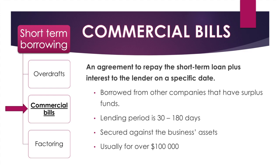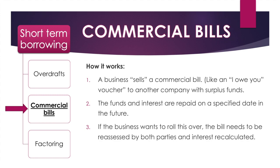Commercial bills are usually for amounts over $100,000. How a commercial bill works is that businesses sell an IOU — a piece of paper saying 'I will repay you.' In order to attain the funds, you sell the bill to a company with surplus funds. On the specified future date, the business that sold the bill repays the funds plus interest. If you're unable to pay and both companies agree, you can roll the bill over, recalculate the interest, and set a new specified date and amount.